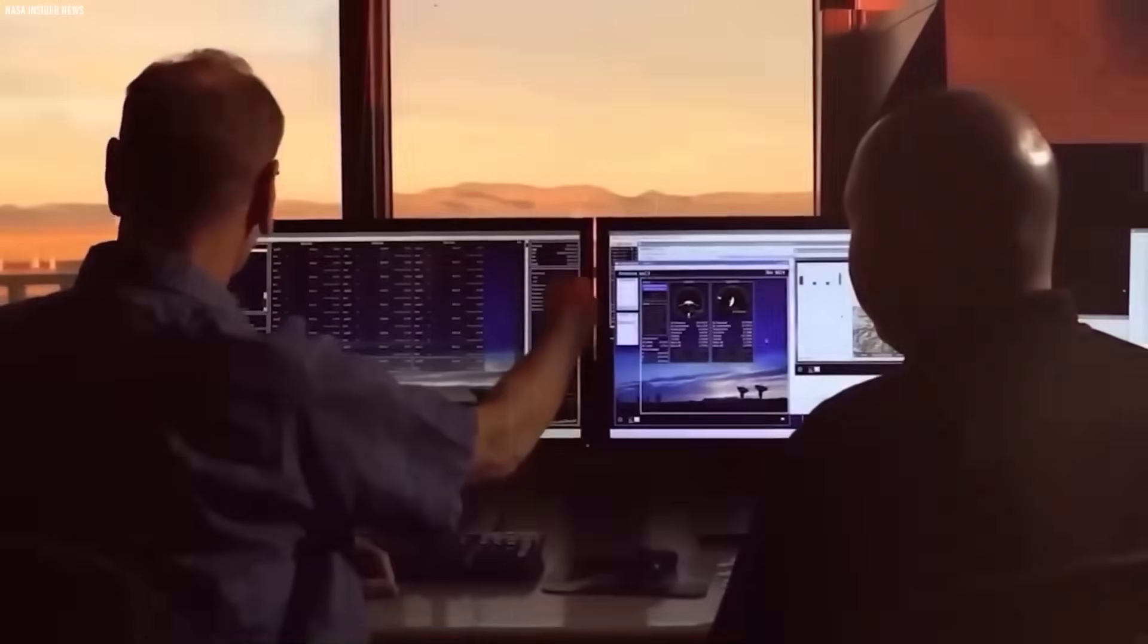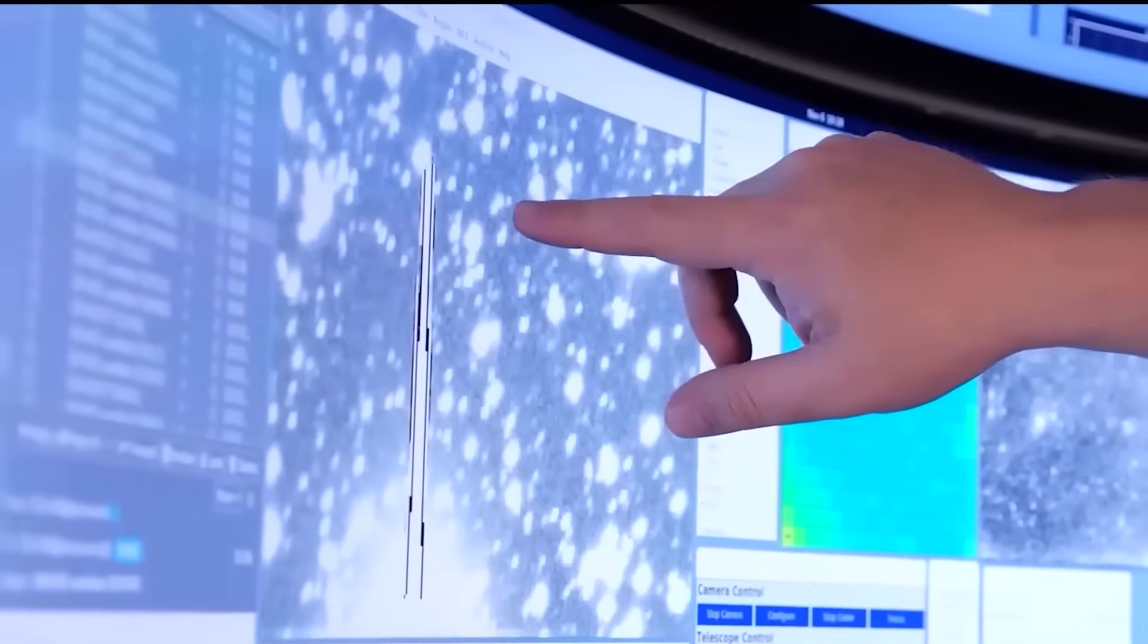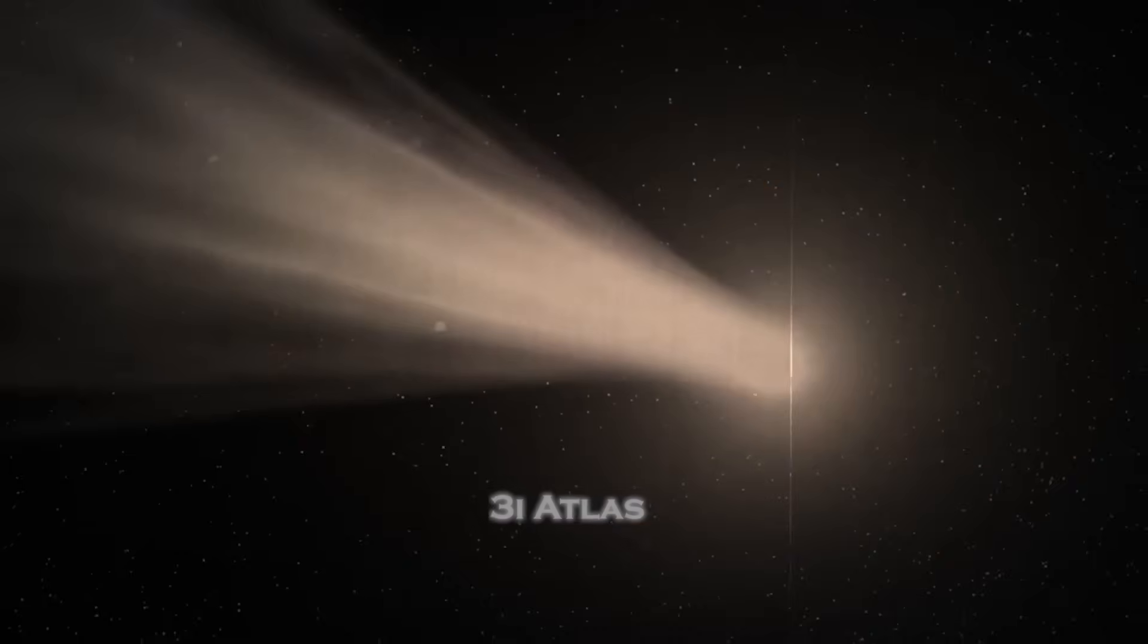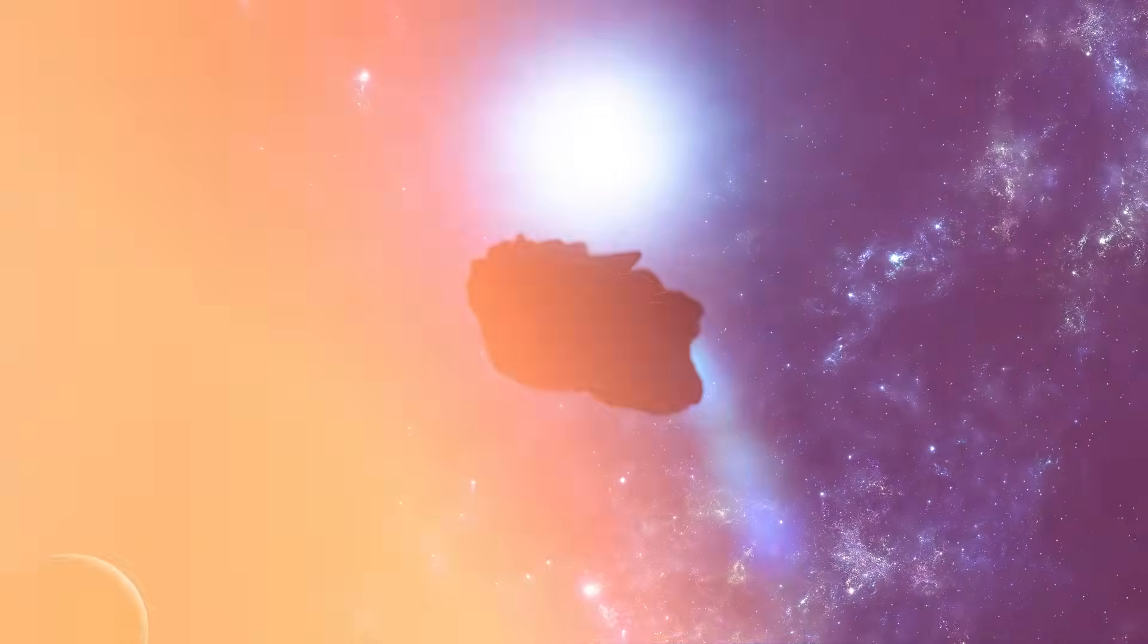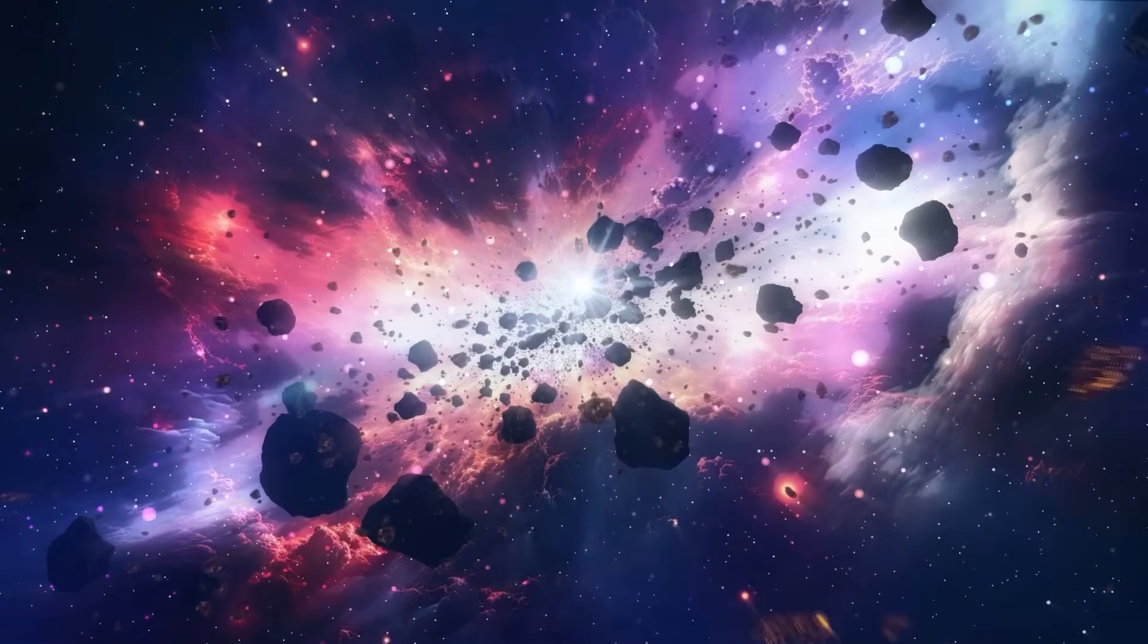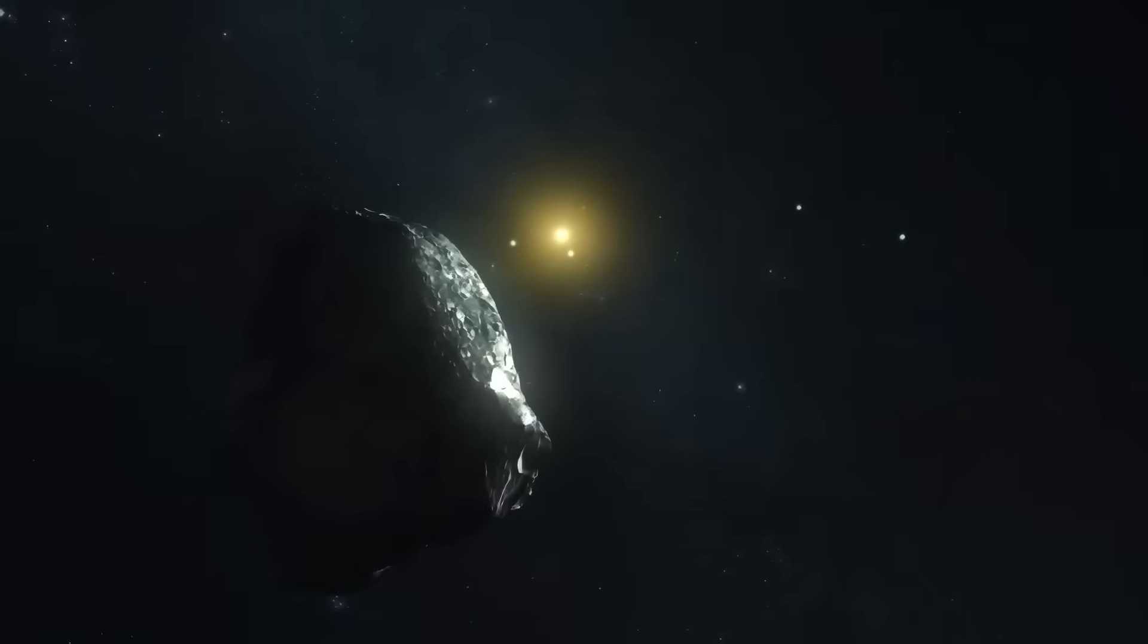As these pieces came together, a radically different hypothesis began to gain traction. What if 3i Atlas is not a comet at all, but a fragment of a differentiated body, a piece of an exoplanet or exomoon torn free in another star system and ejected into interstellar space?